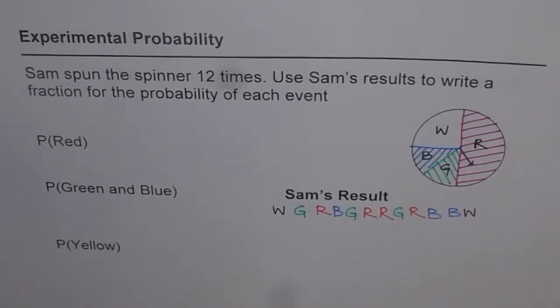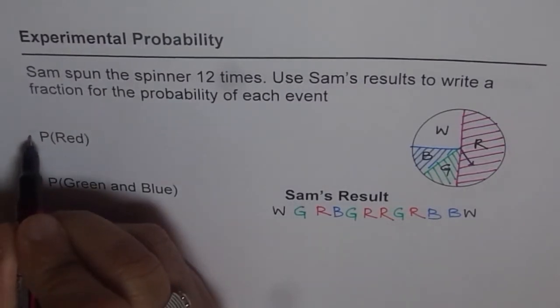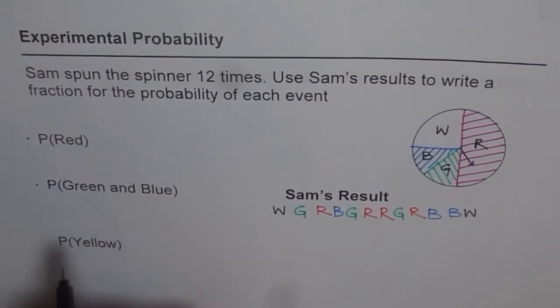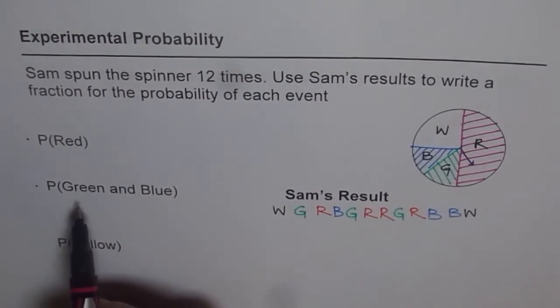So the events are given here on the left side, which are probability when the spinner gets to red, probability when the spinner is on green and blue, and the third one is when the spinner is on yellow.